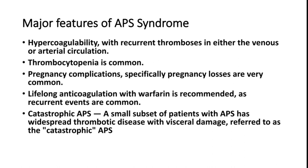A major feature of APS is hypercoagulability — very important. Patients can develop intravascular thrombosis with recurrent thrombosis in either venous or arterial occlusion. Very few conditions produce both venous and arterial occlusion; one is APS syndrome, and another important one is hyperhomocysteinemia. Thrombocytopenia is very common in APS, mostly due to consumption of platelets.